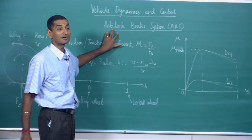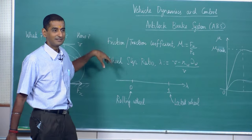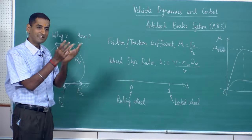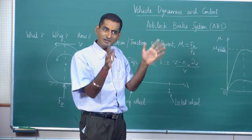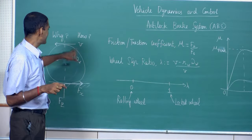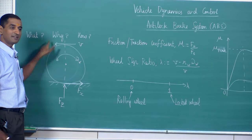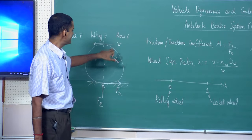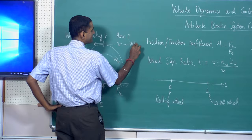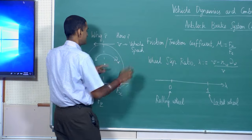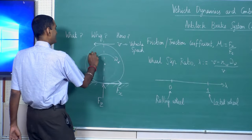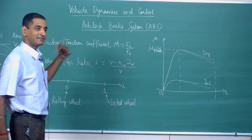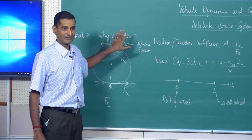What does the word anti-lock mean? Let us understand that, then we will come to figuring out how vehicle dynamics and control becomes important. Let us say I look at only one wheel of a typical passenger car which has four wheels. If I draw a simple diagram, without loss of generality, the wheel is rotating counter-clockwise at an angular speed omega_w, and the vehicle is moving in this direction at vehicle speed V.